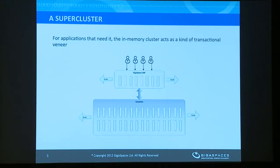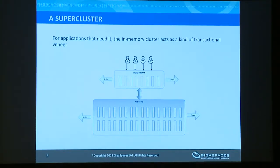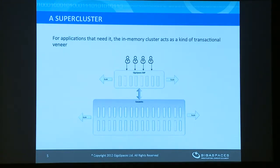The idea is extremely simple: we marry these two. One of the features of XAP is that it can do write-behind synchronization with changes in the in-memory cache. Users effectively access Cassandra through XAP and are able to have what is effectively a transactional veneer on top of Cassandra. XAP communicates with Cassandra behind the scenes in an LRU cache eviction mode, and so various features that you would only find in a relational database suddenly become possible.